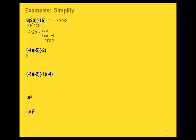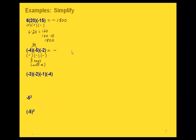In this next one we're counting up how many negatives there are. We have a negative times a negative times a negative — that means three negatives. Three is an odd number, so our answer is going to be negative. Now we think about 4 times 5 times 2: 4 times 5 is 20, and 20 times 2 is 40. So that gives us negative 40.